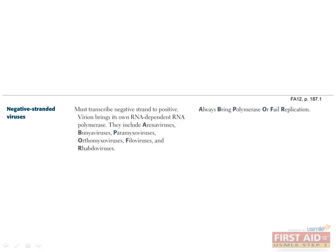The negative-stranded viruses include arenavirus, bunyavirus, paramyxovirus, orthomyxovirus, filovirus, and rhabdovirus. They carry their own enzymes, such as RNA-dependent RNA polymerase, to transcribe a positive-stranded complementary copy of their genome.